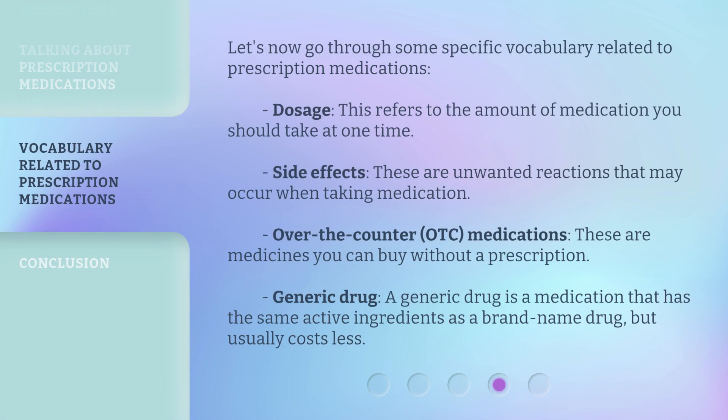Let's now go through some specific vocabulary related to prescription medications. Dosage: this refers to the amount of medication you should take at one time. Side effects: these are unwanted reactions that may occur when taking medication. Over-the-counter, or OTC, medications: these are medicines you can buy without a prescription. Generic drug: a generic drug is a medication that has the same active ingredients as a brand name drug, but usually costs less.